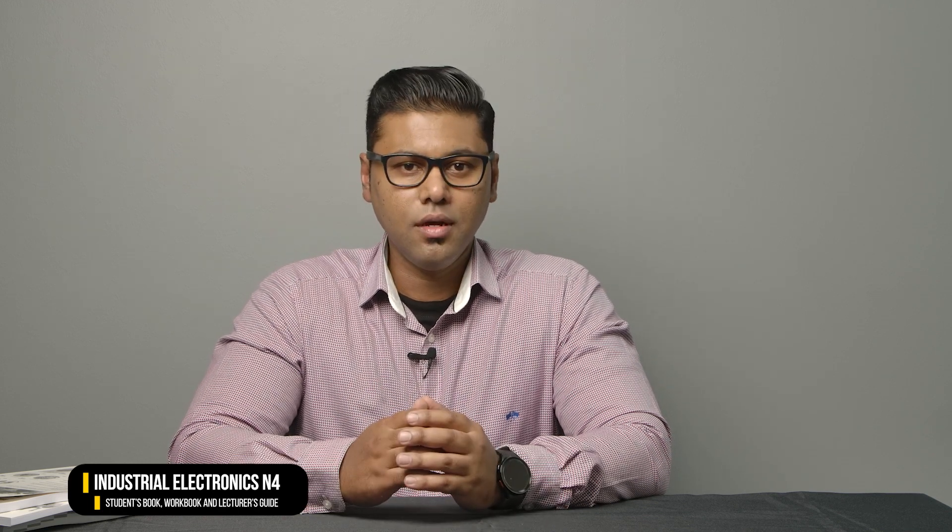What can I expect in the exams? The examination in Industrial Electronics N4 will be a three-hour paper for 100 marks. It is a closed-book exam but a formula sheet will be attached to the question paper. Scientific calculators are allowed.